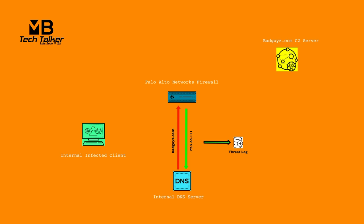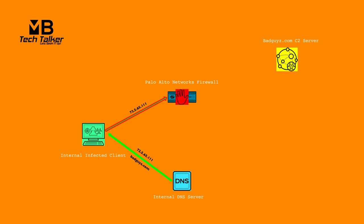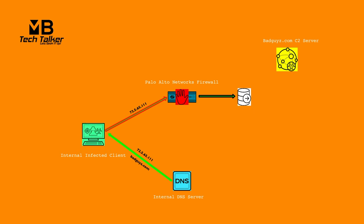The internal DNS server will see the sinkhole address as a response to the badguys.com website and pass that response IP onto the client. The client will attempt to connect to the sinkhole IP address of the firewall, and by configuring a security policy we can deny any traffic that attempts to connect to the sinkhole IP address. This records the client IP address attempting to connect to the sinkhole IP in the traffic log. The infected client will now be recorded as the source of the DNS query and not the internal DNS server.